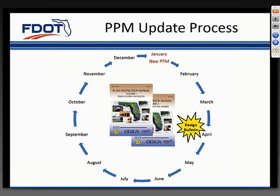Each of the roadway design bulletins pertinent to the PPM that were issued during 2015 identified their own specific implementation timelines. In general, design bulletins affecting the PPM will remain effective until the official manual revision is published, which for the current version was on January 1st of this year.